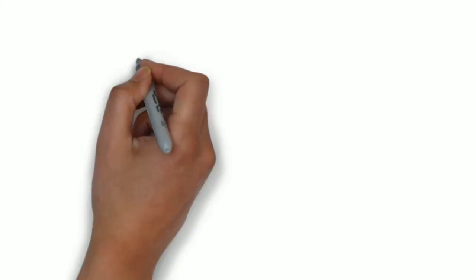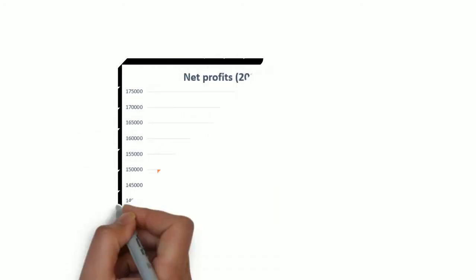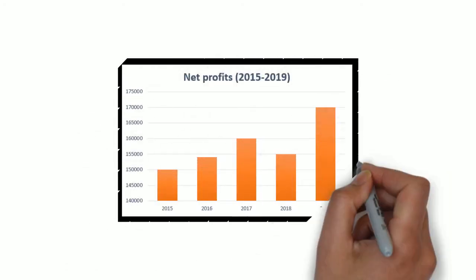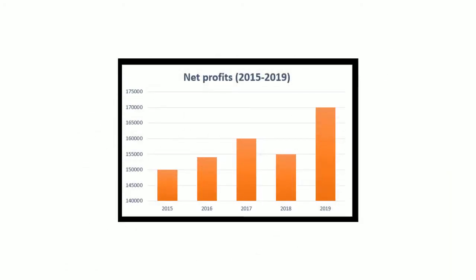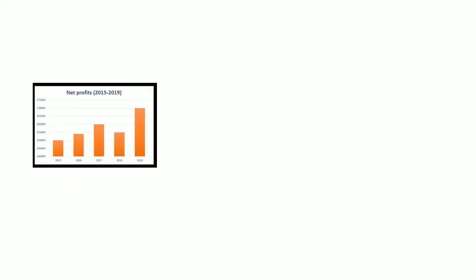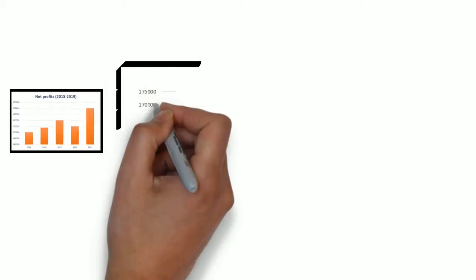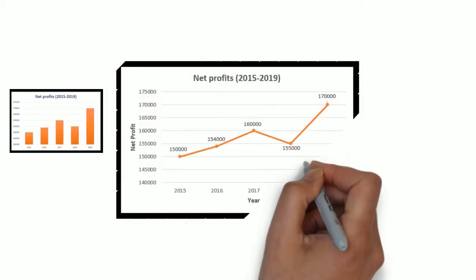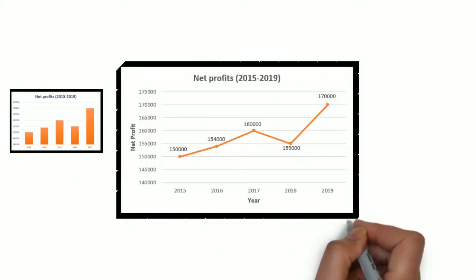You may think, why can't we use a bar chart here? What's the difference? We can use one, but the general rule is that bar charts are used when the changes in the data points are larger. When smaller changes exist, line graphs are better than bar graphs.